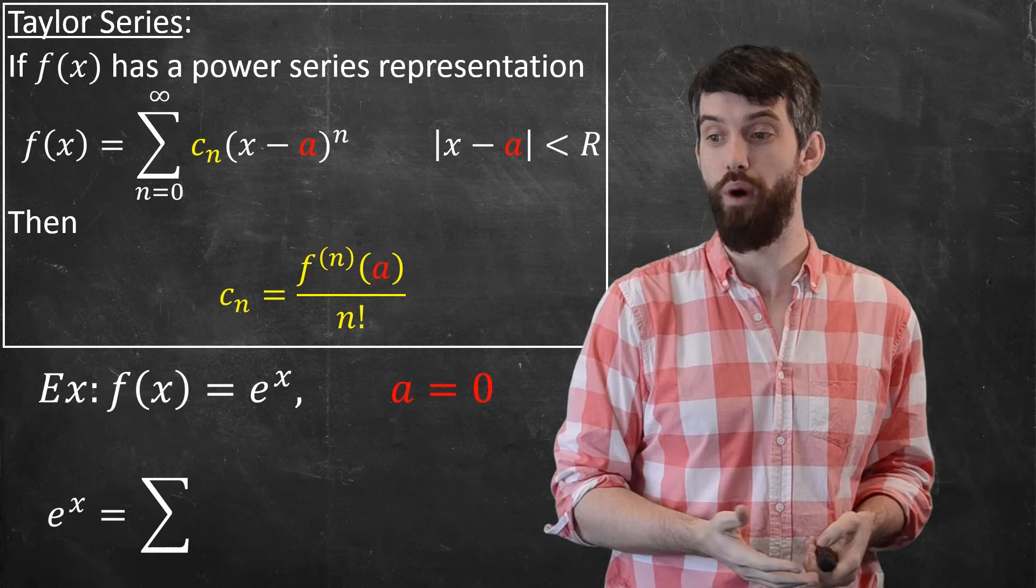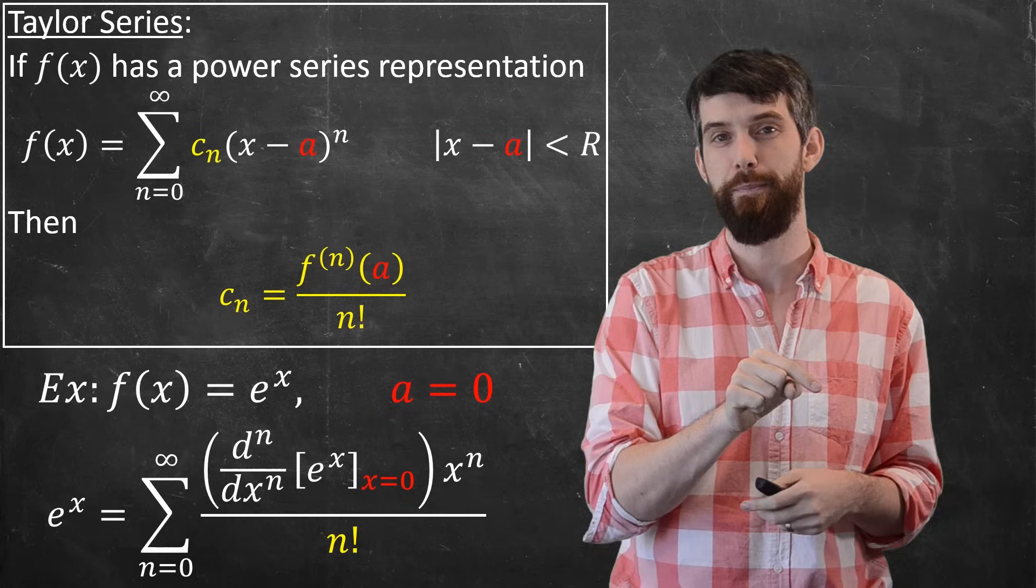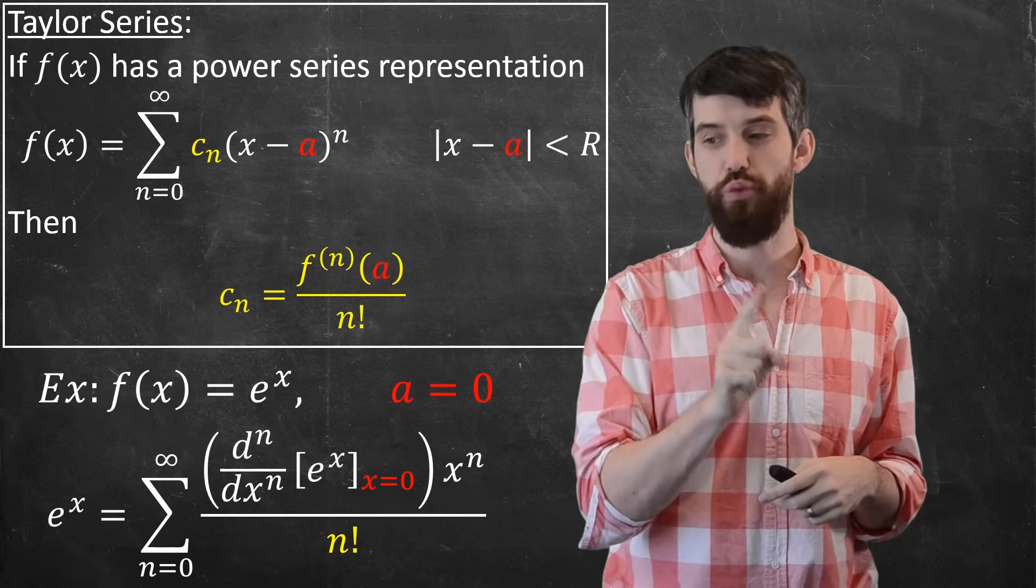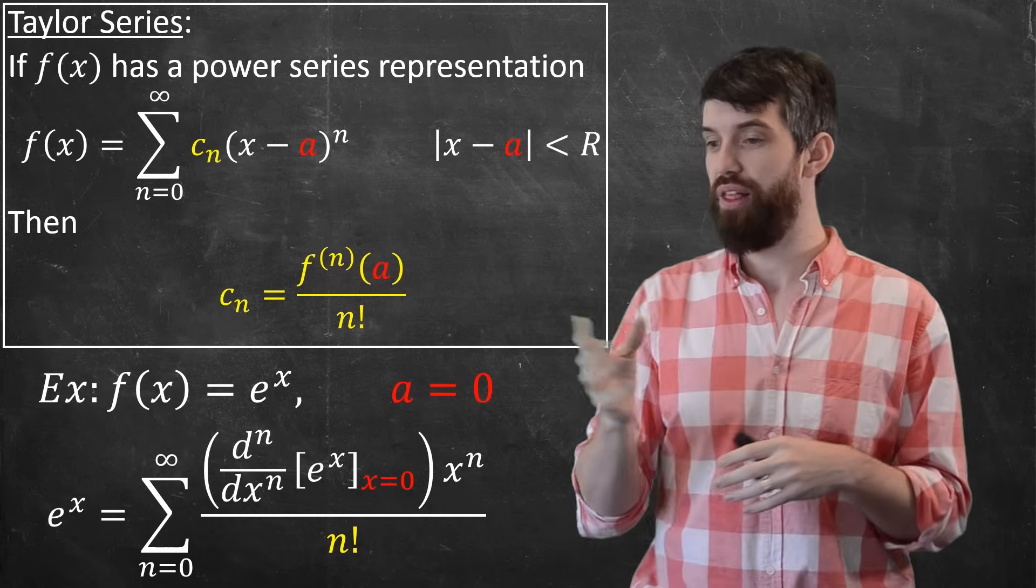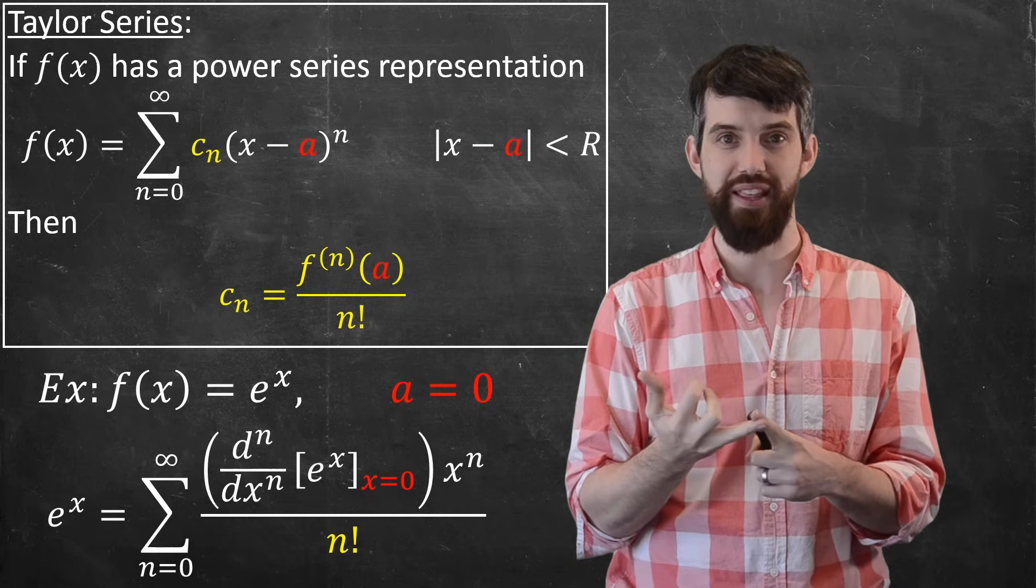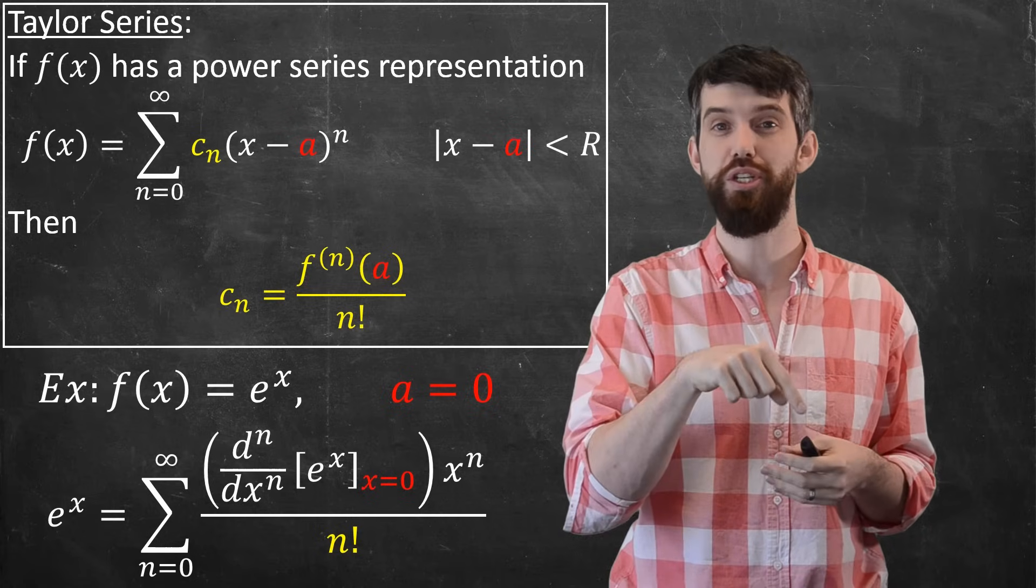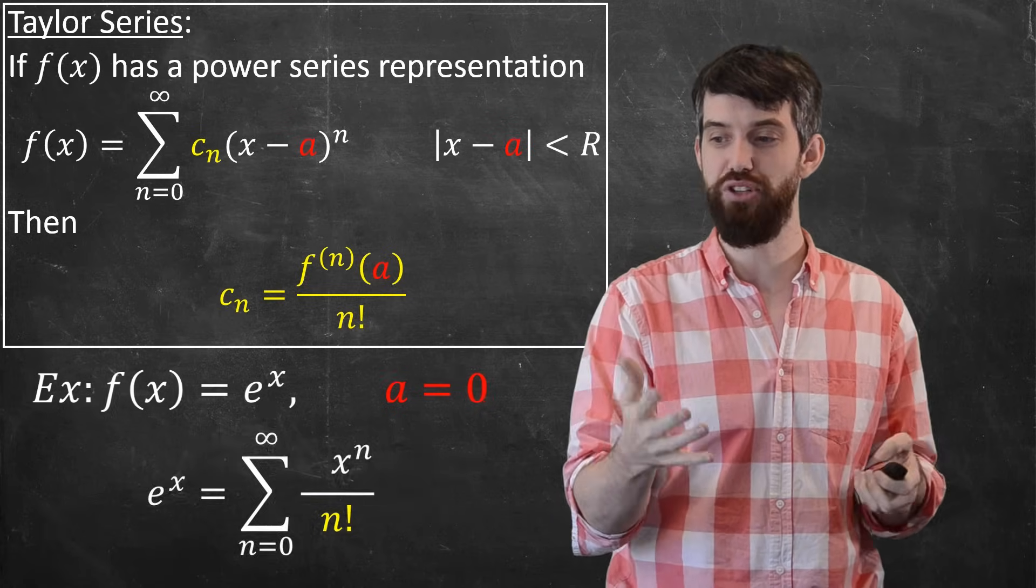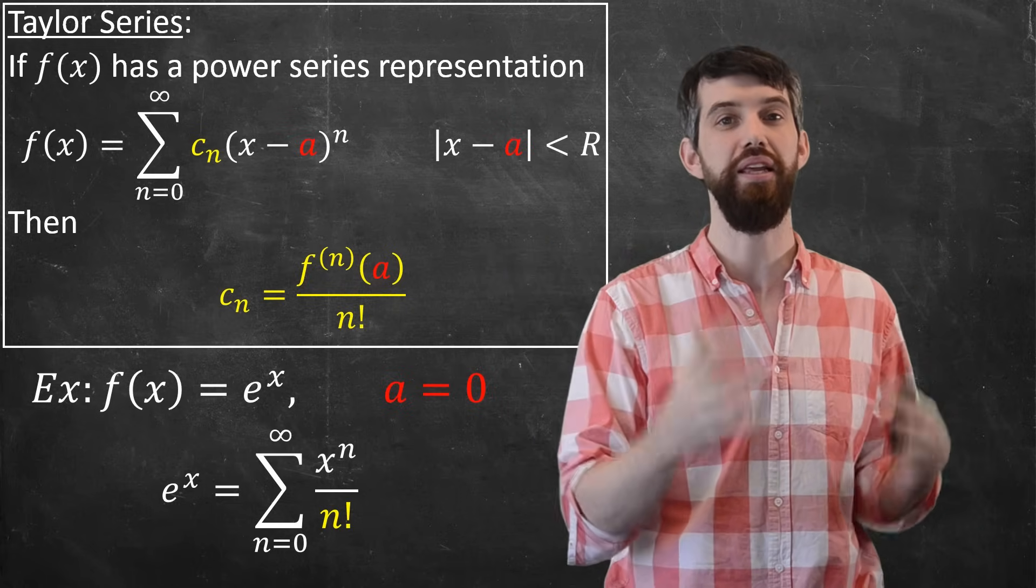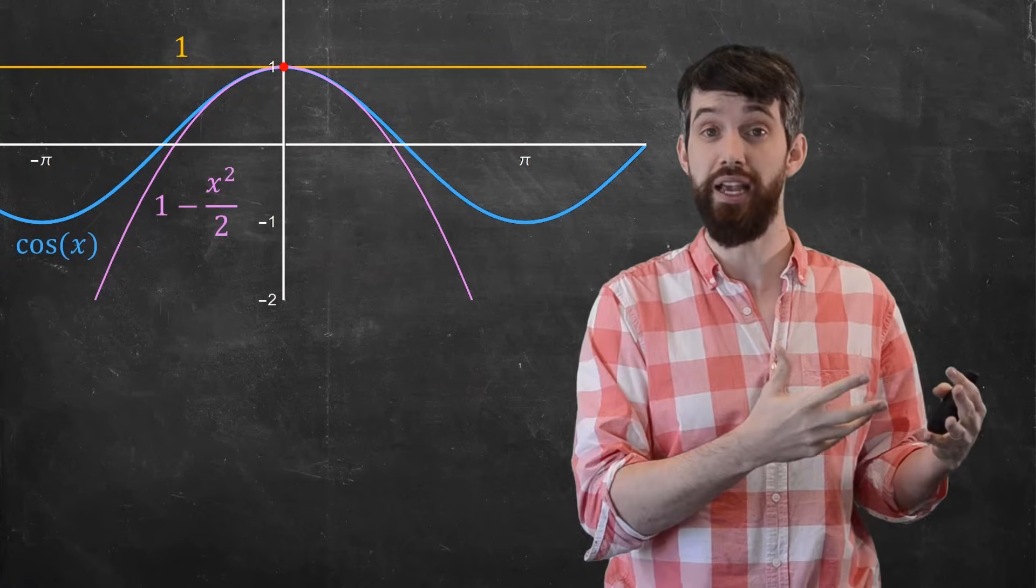So let's look at that example that we had before. We started with e to the x, and I'm doing it around a equal to zero. Zero is the spot where I'm approximating it. Then if I plug into my big formula, in place of the nth derivative, I've written it down here in Leibniz notation, the nth derivative of e to the x evaluated at zero. But for e to the x, the first derivative is e to the x, the second derivative is e to the x, so e to the x is all the way along. So it's just e to the x when I take n derivatives. Plugging in zero, it's e to the zero, which is one. So all of that mess goes away, and I'm just left with x to the n over n factorial. So this is the Taylor series for e to the x.